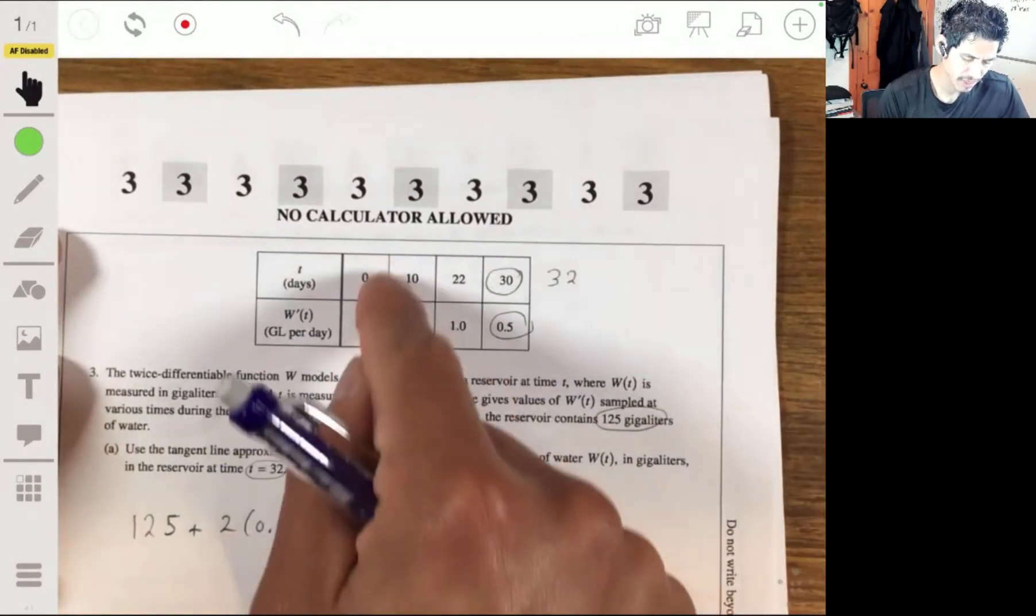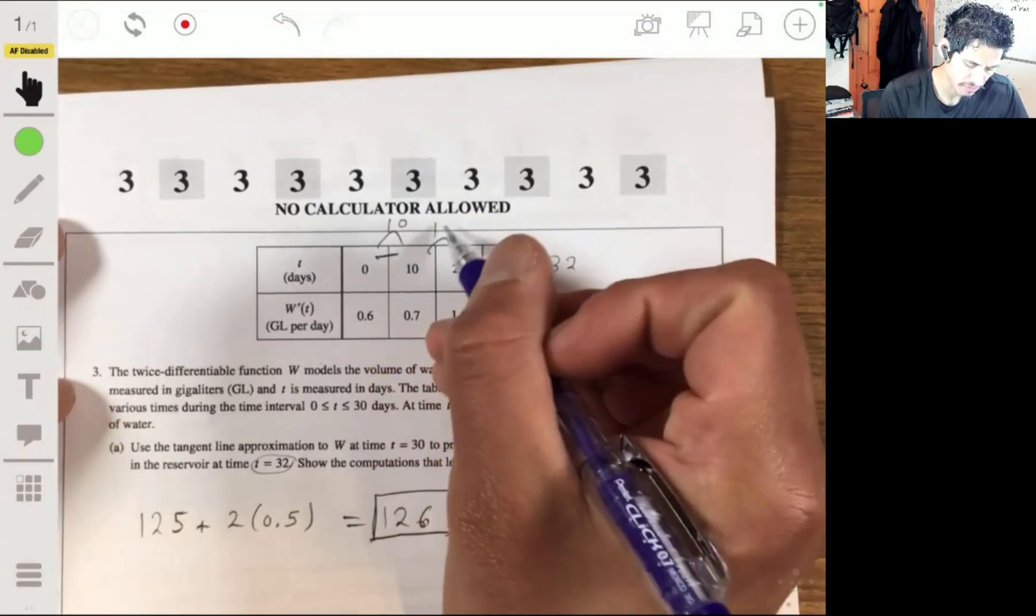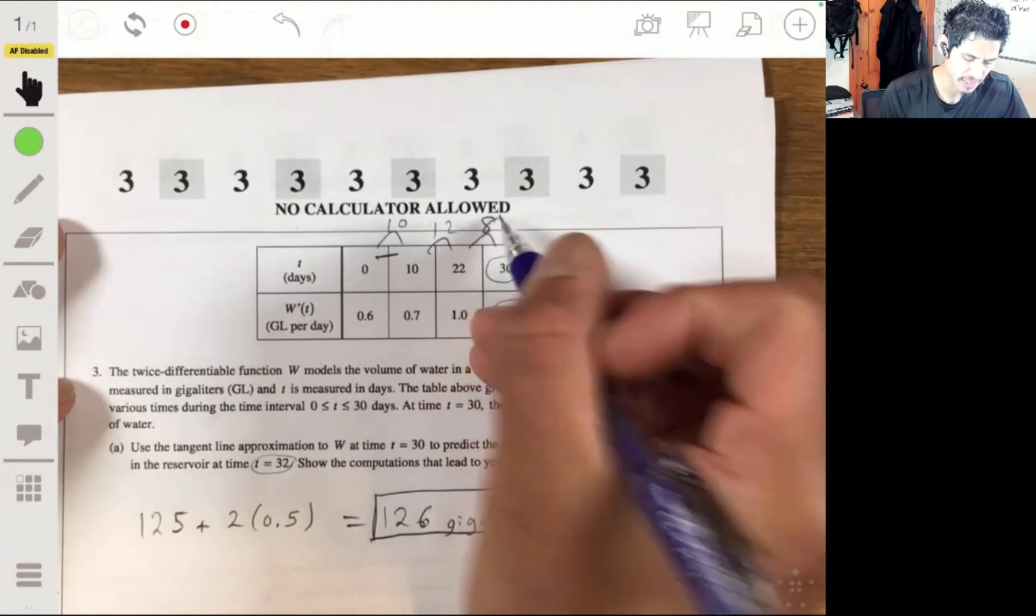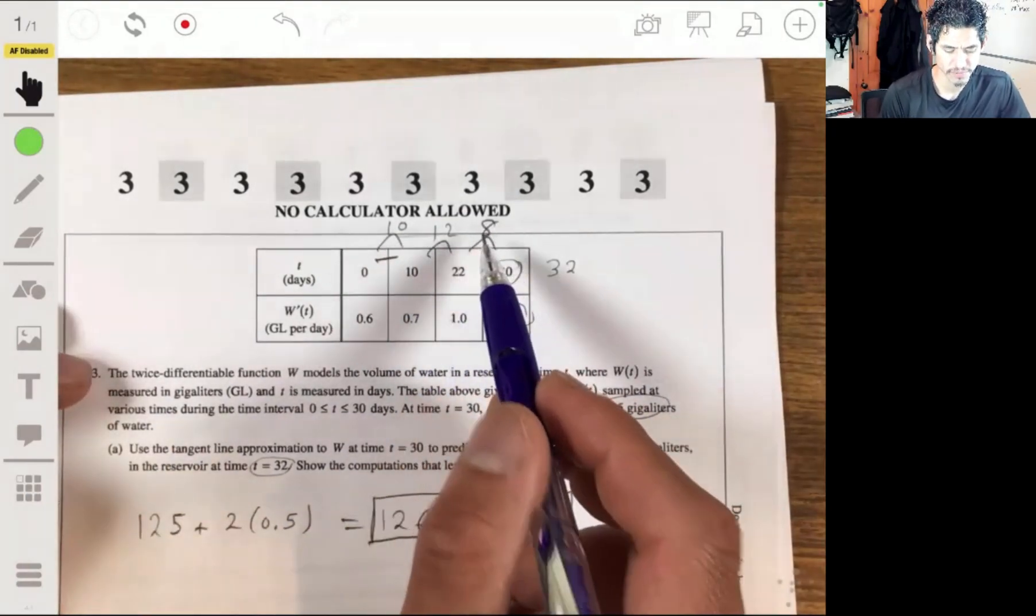So let's just look at what we have here. We can only really make three rectangles because all we have are three widths. We have one width here of 10, we have a second one here of 12, and a third one here of 8. So each of these are the bases of the rectangles.